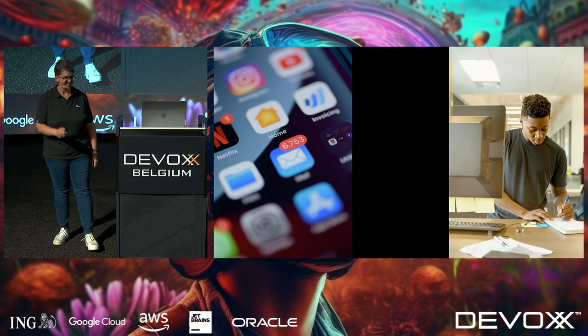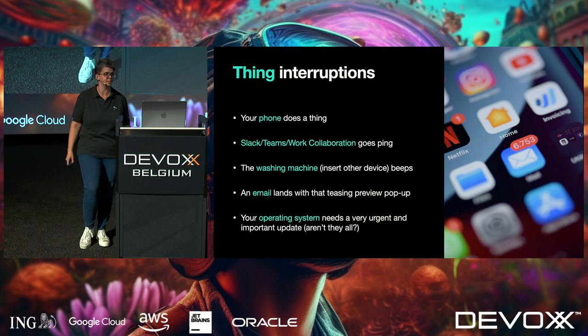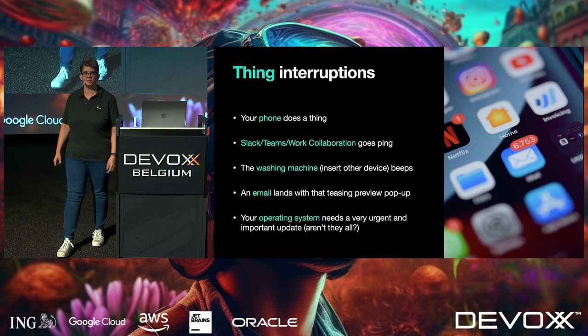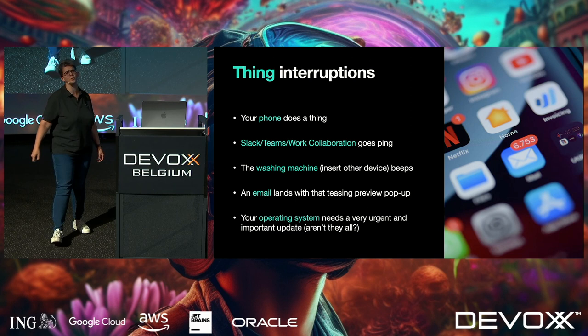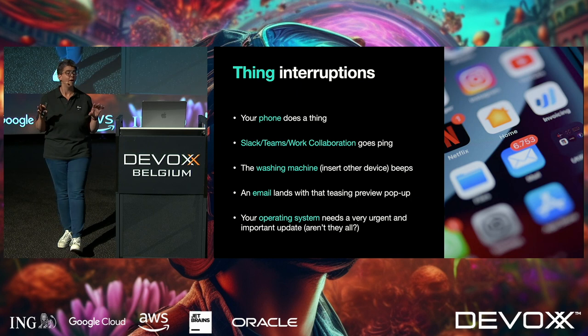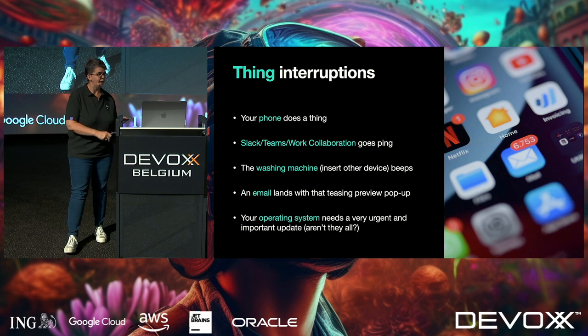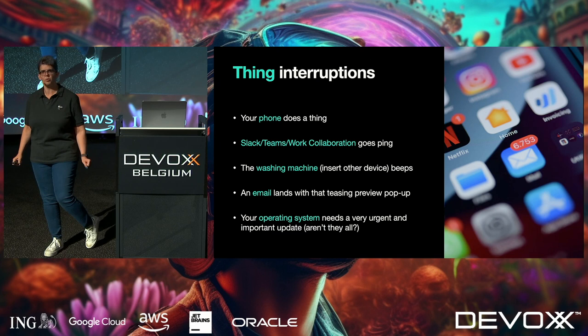Things that interrupt us: your phone, Slack, Teams — ding, new DM. Your washing machine — if you have a Samsung it plays 30 seconds of Schubert when the washing is done and just keeps going while you're trying to work. An email landing with a pop-up — extra anxiety points if it's from your manager. Your operating system needs an update — always urgent, critical, zero-day vulnerability, et cetera.